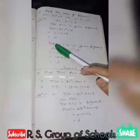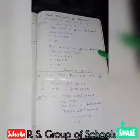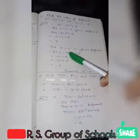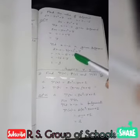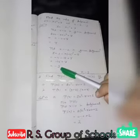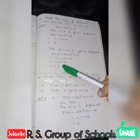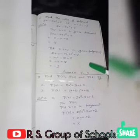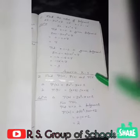Now put x equal to minus 2 in the given polynomial: 2 into minus 2 minus 3 into minus 2 square plus 7. Then minus 4 minus 12 plus 7 equals minus 9. The value of the polynomial at x equal to minus 2 is minus 9. So the answers are 7 and minus 9.